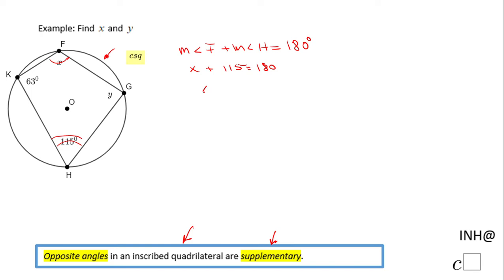Similarly, we can approach angle G and angle K. Angle G and K also are supplementary for the same reason. They are opposite angles in this inscribed quadrilateral.